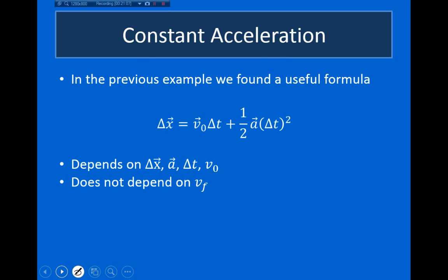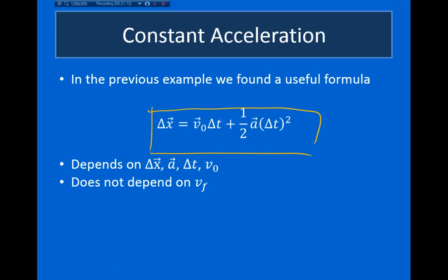In the previous example, we derived a very important kinematic formula: delta x = v-naught·delta t + ½a·delta t². This equation involves displacement, acceleration, delta t, and v-naught — but not v-final. So if you're asked about v-final, this isn't the equation to use. If the problem involves delta t, this is probably a good equation to look at.